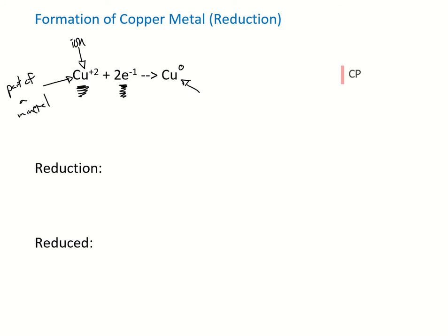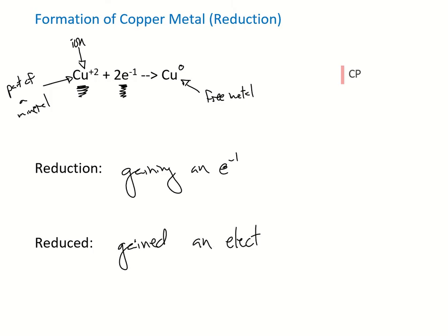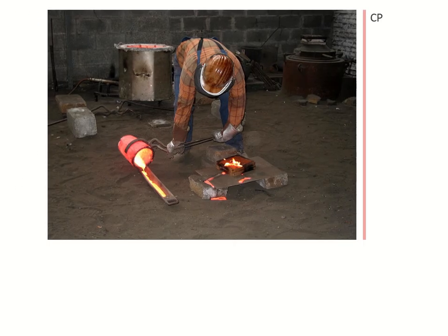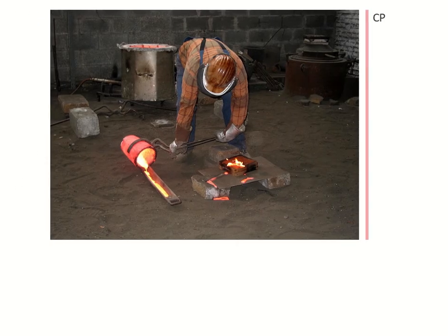Copper without a charge is a free metal — that is to say, it's all by itself. So this process of gaining an electron is called reduction. If something has been reduced, that's the past tense, it has gained an electron. We see off to the side here potentially an example of some reduction.